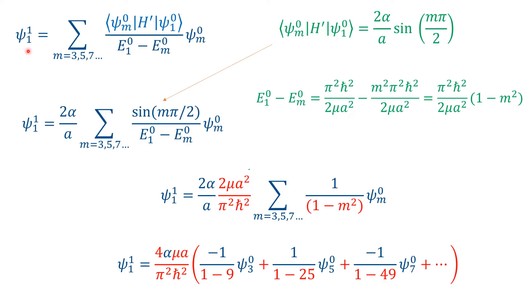The first-order wave function correction can be written as a summation over m. Since even m gives zero contribution, we take only odd values: m = 3, 5, 7, ... (we exclude m=1 because that is the state being corrected). Our question asks for the first three terms, which correspond to m = 3, 5, 7. By definition this equals summation over m of bra(psi_m^(0)) H' ket(psi_1^(0)) divided by (E_1^(0) minus E_m^(0)) times psi_m^(0).